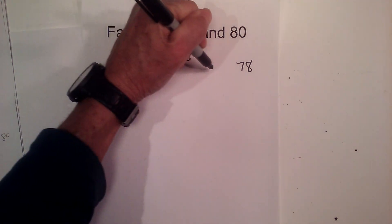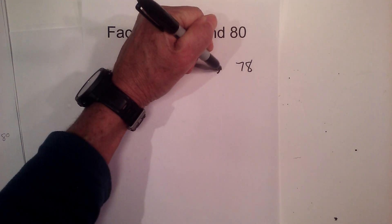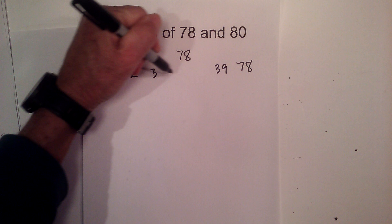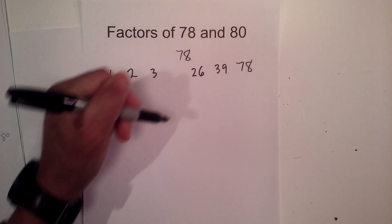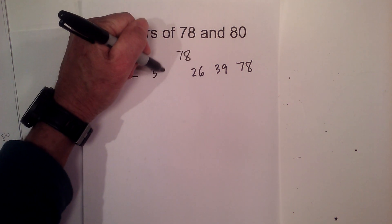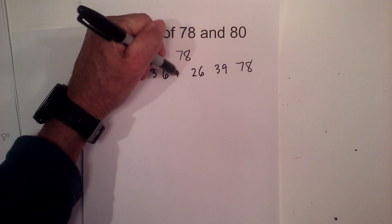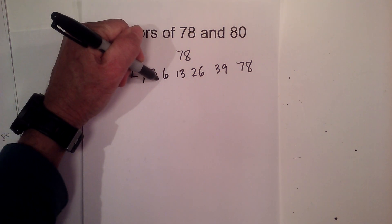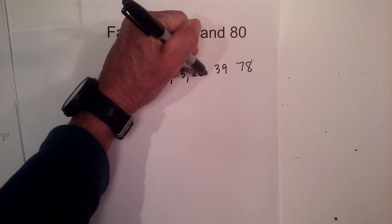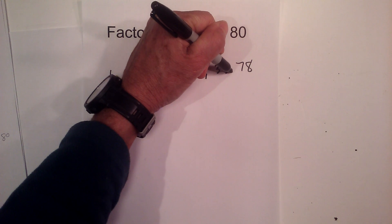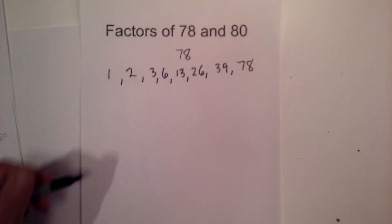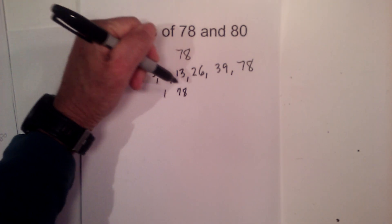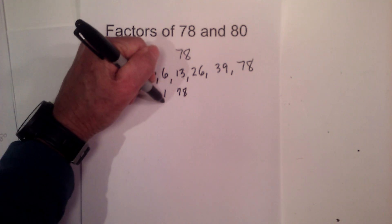Then we have 2 times 39, then 3 and 26, and then 6 times 13. So the factors are 1, 2, 3, 6, 13, 26, 39. In pairs, they are 1 times 78, 2 times 39, 3 times 26, and 6 times 13.